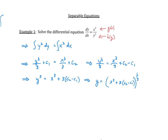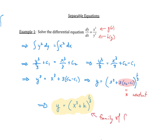That whole piece — 3(c2 − c1) — is really just some constant, so we're going to call it k. Our final answer is the function y = (x³ + k)^(1/3). This differential equation gives us a family of functions — k will change and that gives us the family, so we have different values of k.